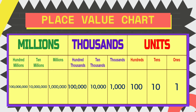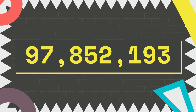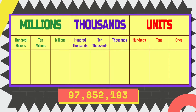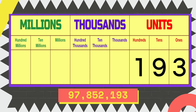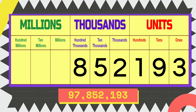Let us use this number in our example: 97,852,193. Now let us locate the position of each digit in a number using the place value chart. Three is in ones, nine is in tens, one is in hundreds, two is in thousands, five is in ten thousands, eight is in hundred thousands, seven is in millions, nine is in ten millions. That is the position of each digit in the number.